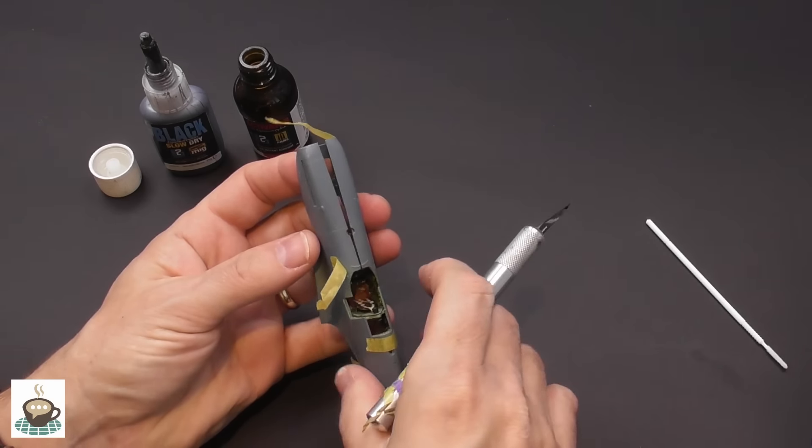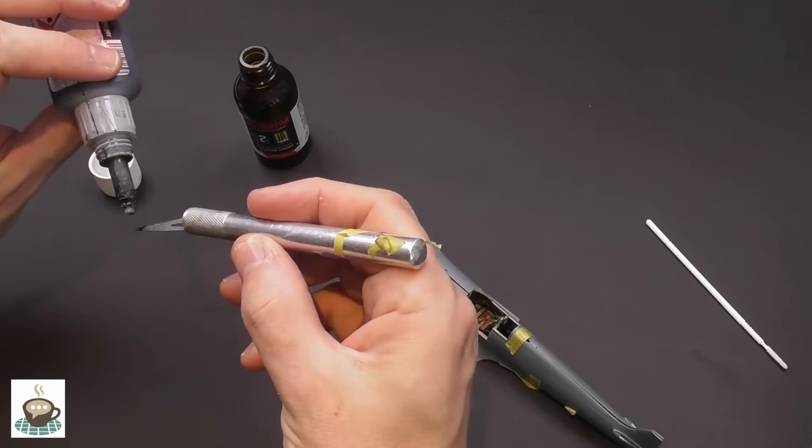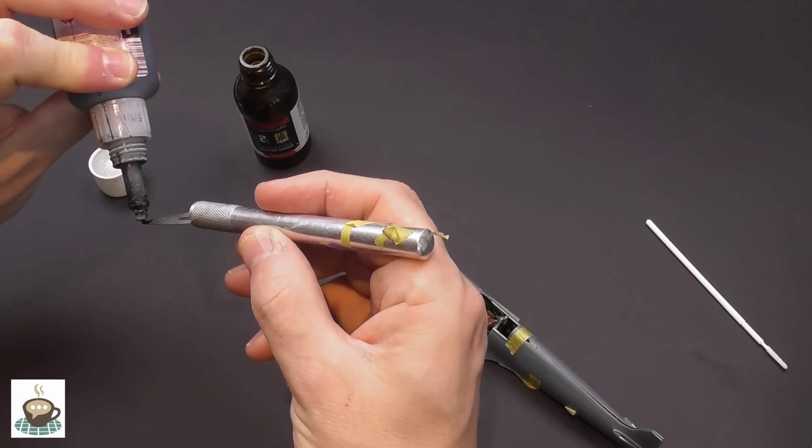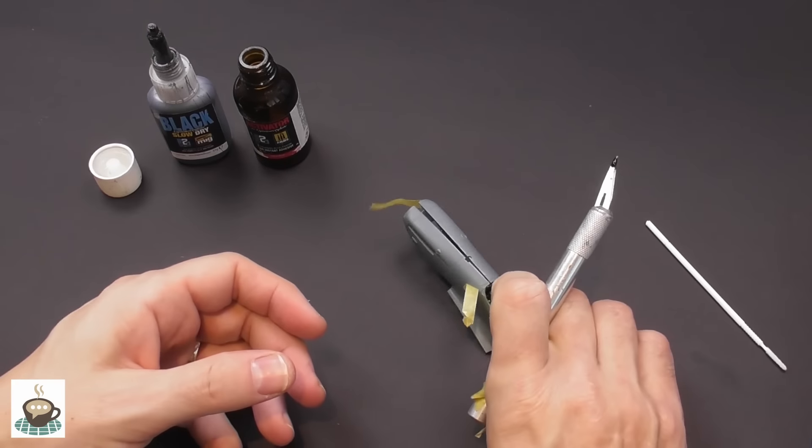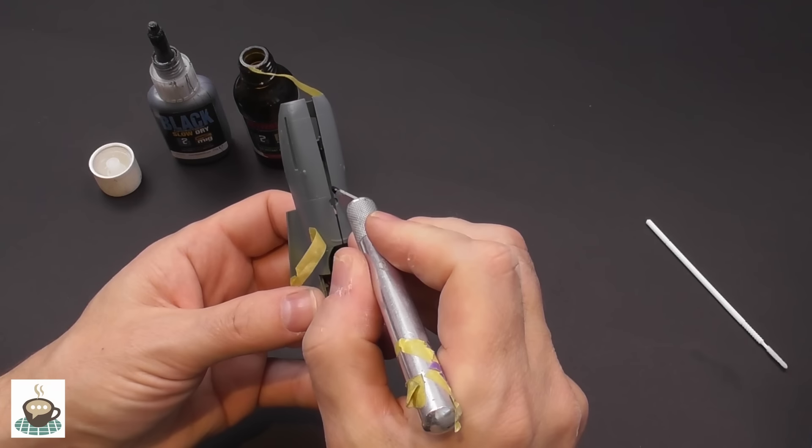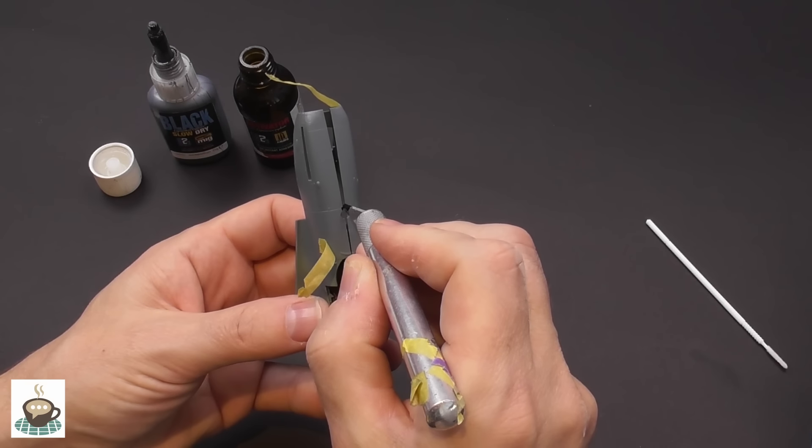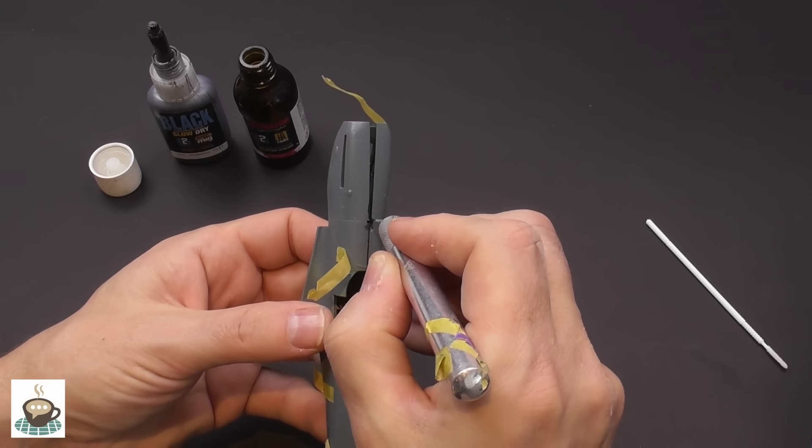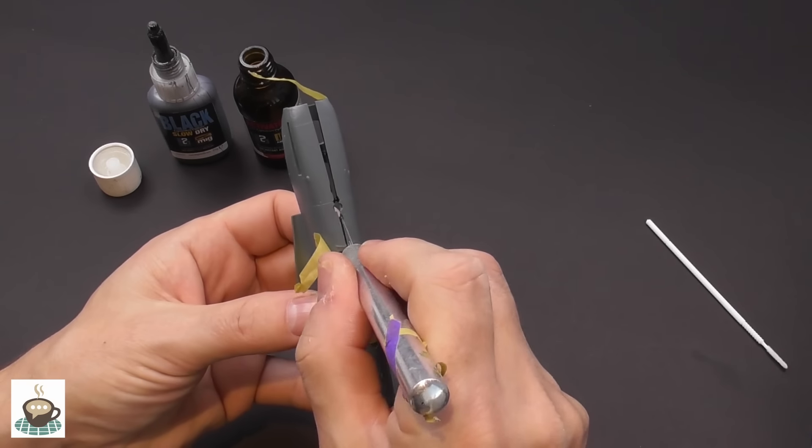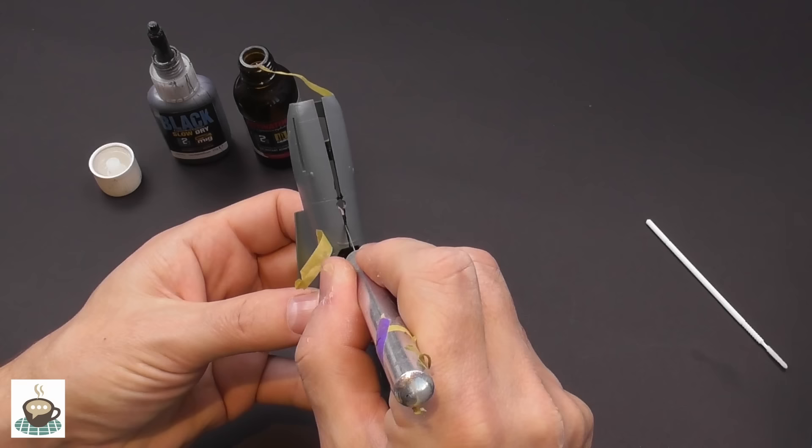I'm doing my usual here of using black super glue to glue the fuselage halves together. There's a number of reasons why I use this and not traditional modeling cements. The main one is speed and it completely eliminates the need or the risk of any shrinkage.